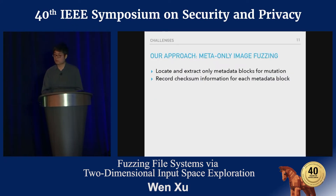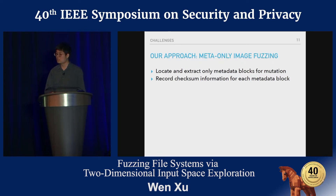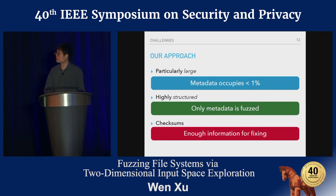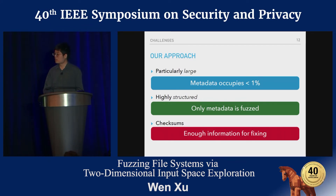That's why we propose our approach: metadata-only image fuzzing. Simply put, we locate and extract all the metadata from a seed image, and during mutation we only mutate the metadata. By doing this, we suffer from much less I/O cost because metadata occupies only a small portion of a disk image. And because we accurately locate all metadata on the image, we can easily fix the checksums after each round of mutation.